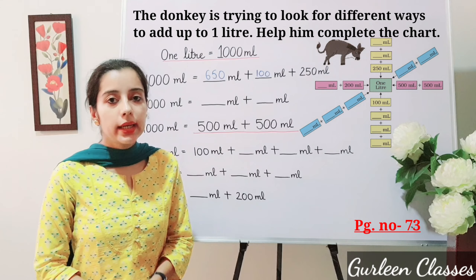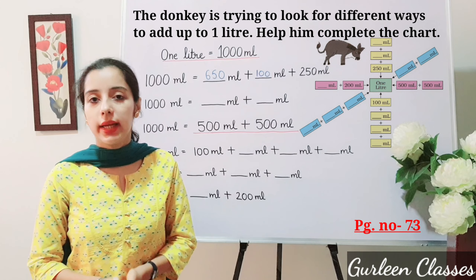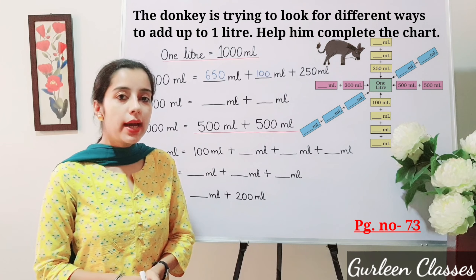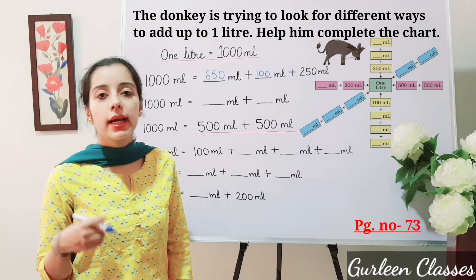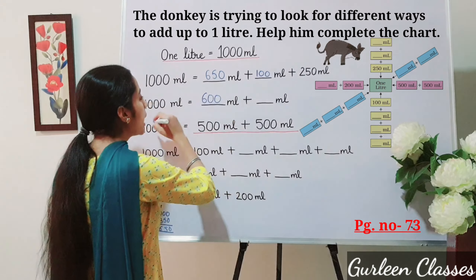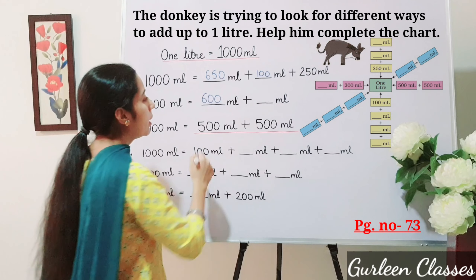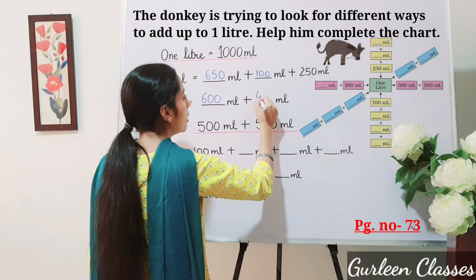One thousand milliliter equals dash milliliter plus dash milliliter. We can write 600 milliliter. Then one thousand minus 600 is 400. So write 400 milliliter. Next: one thousand milliliter equals 500 milliliter plus 500 milliliter — it is already written in your book.